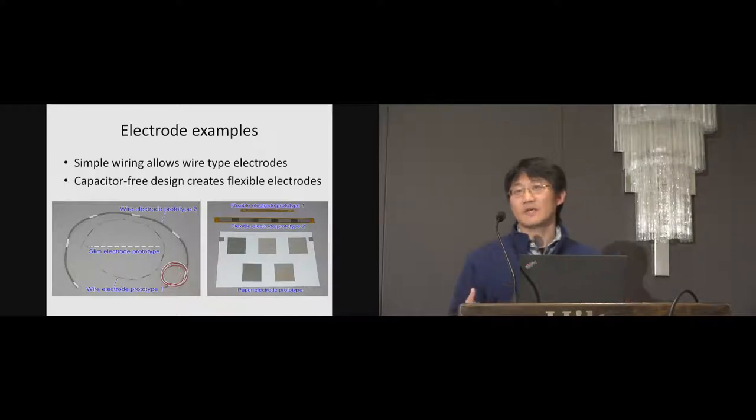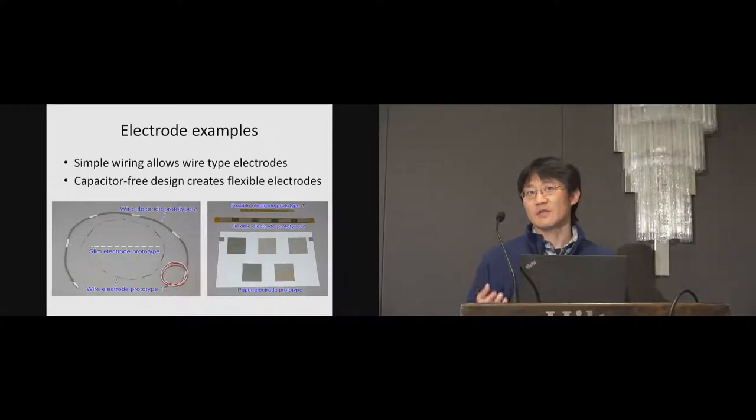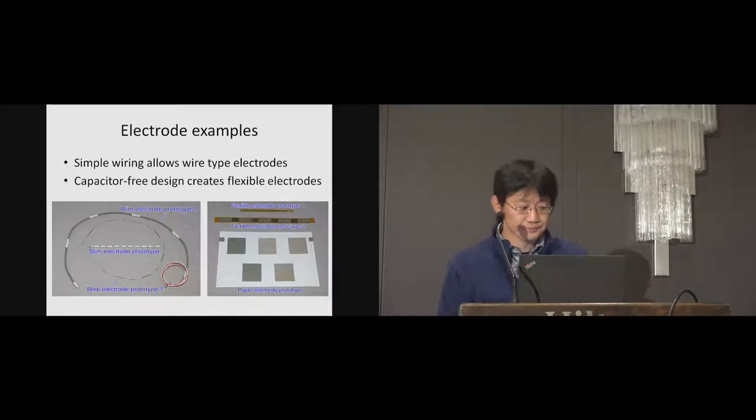These are electrode examples that emphasize our technique. The left figure shows wire and slim electrodes. Wire electrode prototype one simply connects actual lead capacitors with metal pipes - the leads and pipes work as touch sensors. Wire electrode prototype two is made by single core cable and conductive mesh hoses. The mesh hoses work as touch sensors. The slim electrode prototype was made on a PCB - it has 10 electrodes on a narrow PCB with width of 3 millimeters.